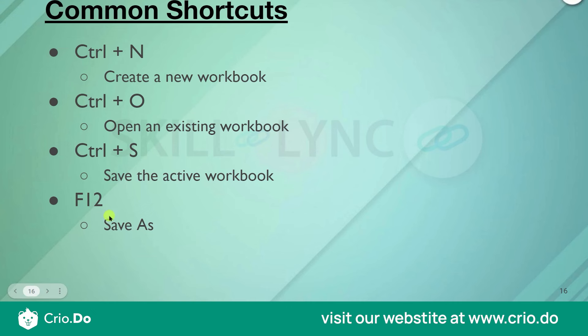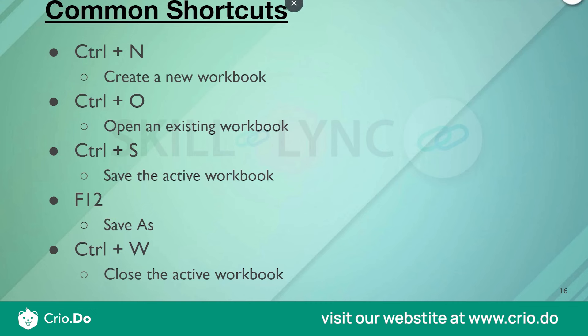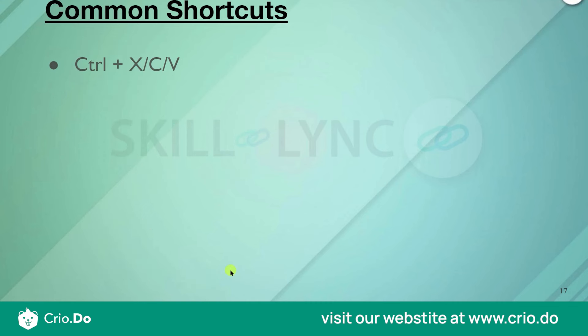So that is the difference between Save and Save As. The shortcut key for Save As is F12. We have discussed four shortcuts so far: Ctrl+N to create a new workbook, Ctrl+O to open an existing workbook, Ctrl+S to save the active workbook, and F12 for Save As. Ctrl+W is used to close the active workbook — you can do it directly from the keyboard without going to the menu.